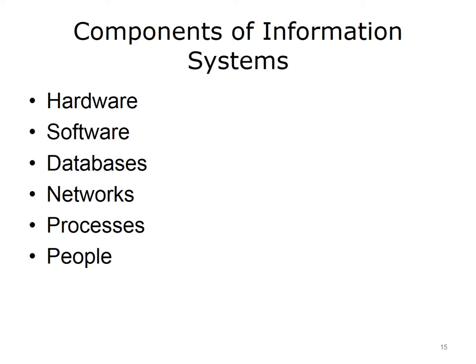For example, electronic health record software allows clinicians to view and update a patient's record. Databases are collections of organized data — they store data based on relationships, which makes it easier to retrieve the data. Networks connect hardware components, allowing software and databases to connect and work together. Processes are the procedures used for accomplishing tasks; the information system will automate and/or aid processes necessary for the effective use of the system. Finally, people are an important part of information systems — they design, implement, use, and maintain the systems over time.